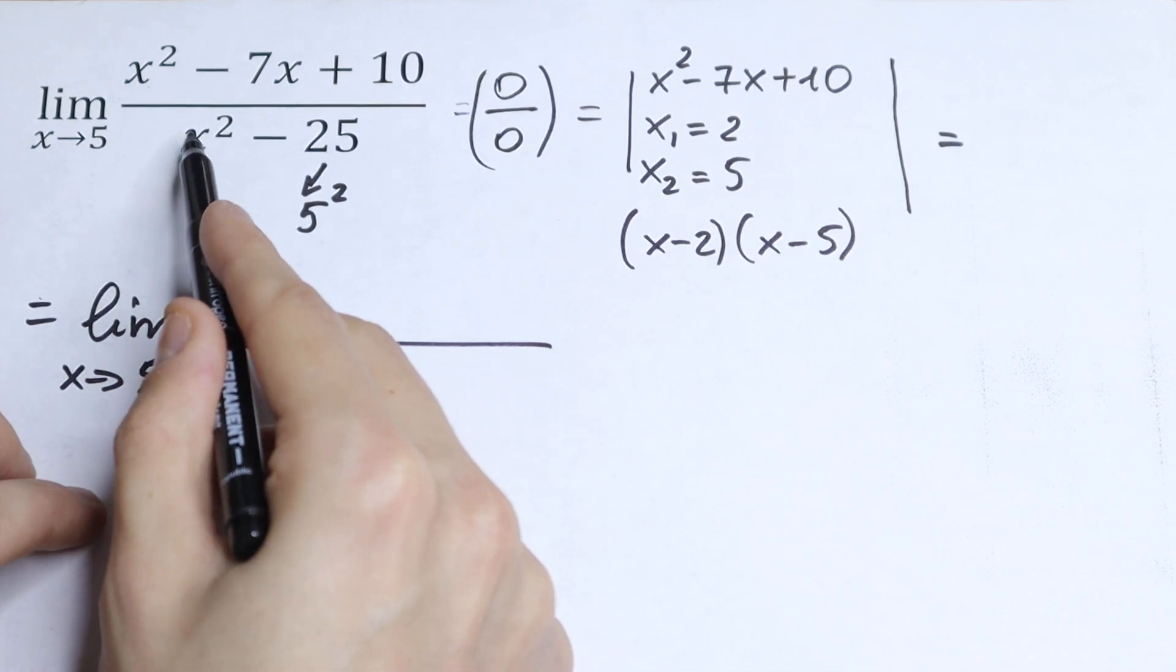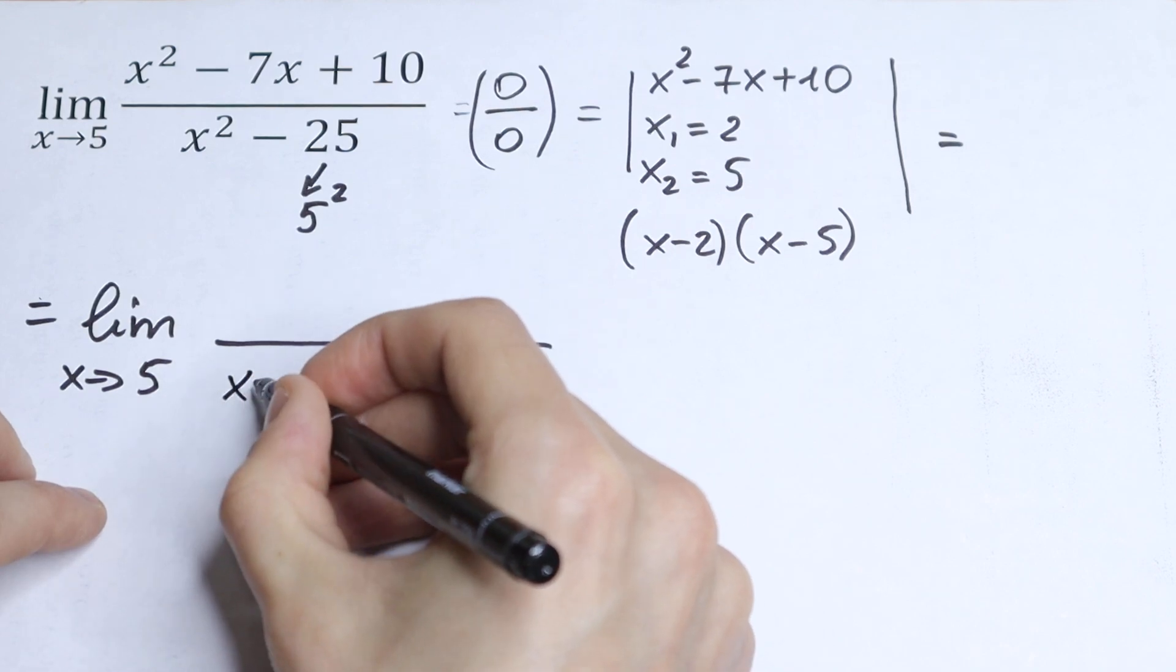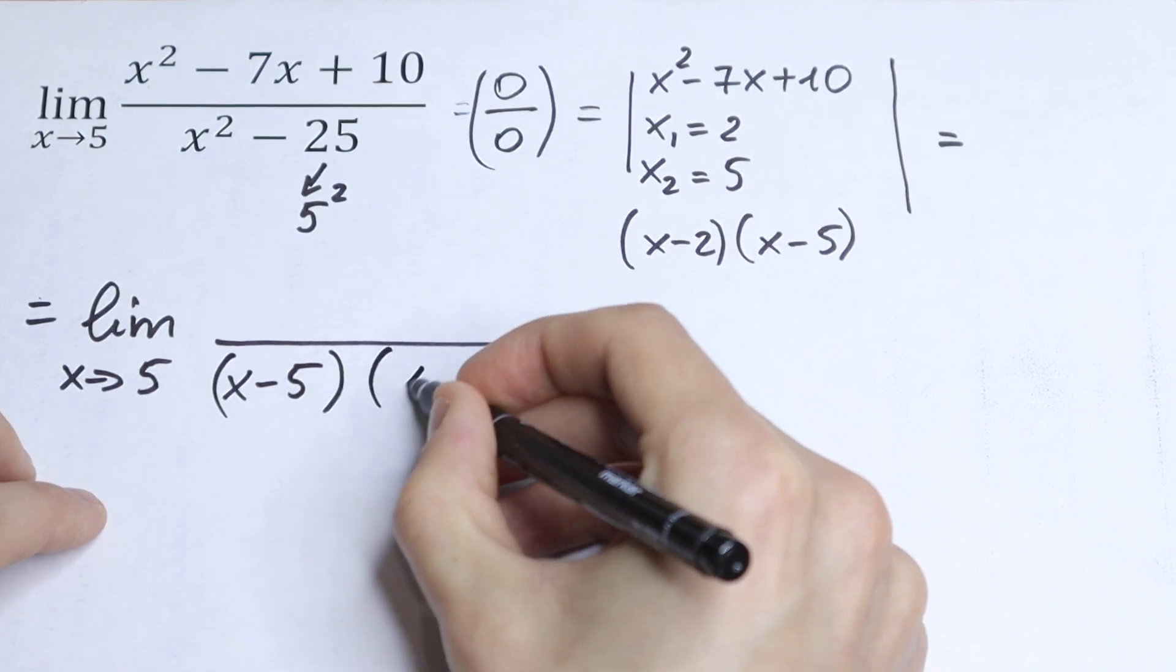Instead of a we have x, and instead of b we have 5. So the difference of squares is (x minus 5) times (x plus 5).